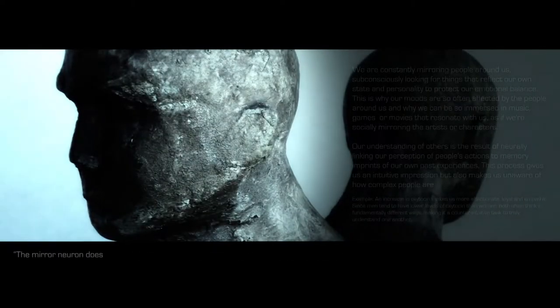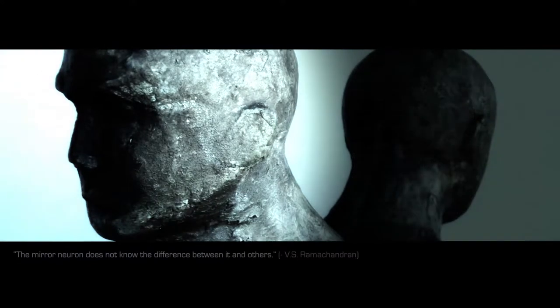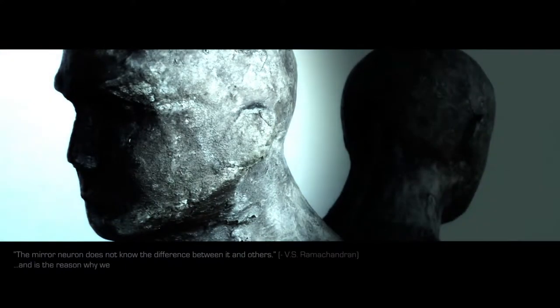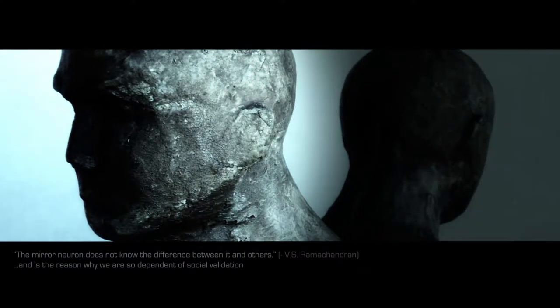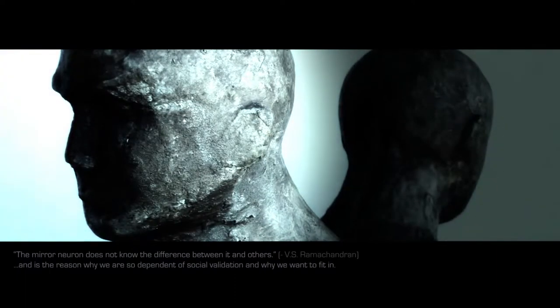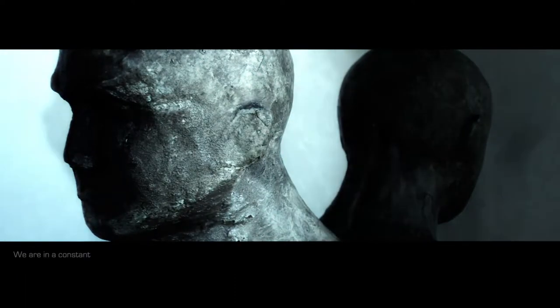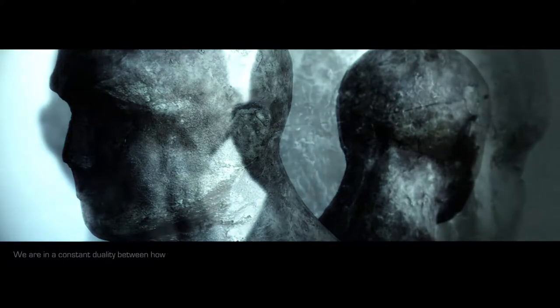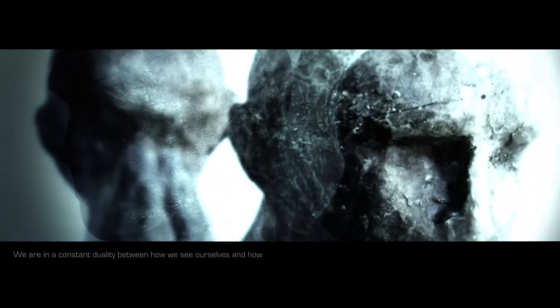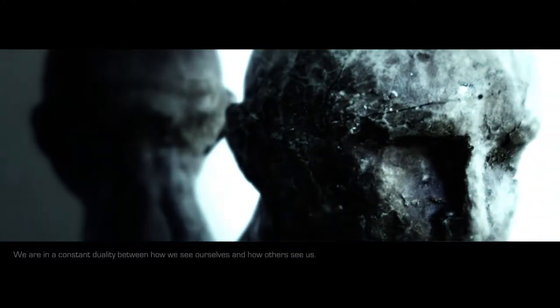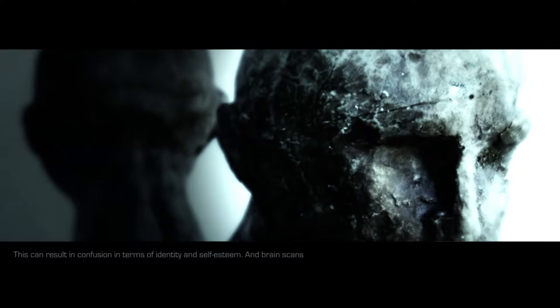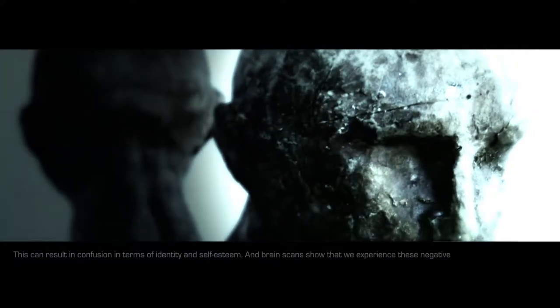The mirror neuron does not know the difference between it and others, and is the reason why we are so dependent on social validation and why we want to fit in. We are in a constant duality between how we see ourselves and how others see us. This can result in confusion in terms of identity and self-esteem, and brain scans show that we experience these negative emotions even before we are aware of them.